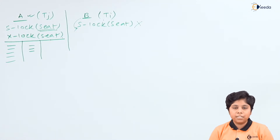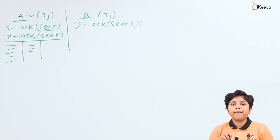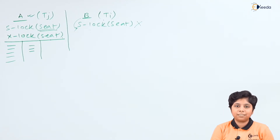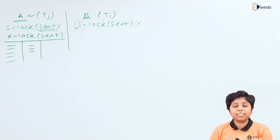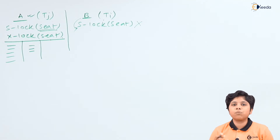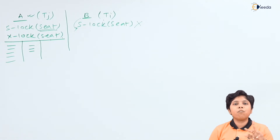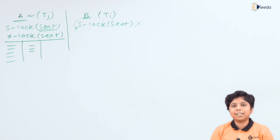If we had used the strict two-phase locking protocol where locks are acquired and maintained until transaction commitment, this problem could be avoided. However, since we are using a weaker level of consistency, users A and B cannot have all concurrent features in a real-time interaction. One approach is to split the transaction into two interactions: one for seat selection with a shared lock, and another for payment with an exclusive lock, allowing other users to select seats while one user is still browsing.